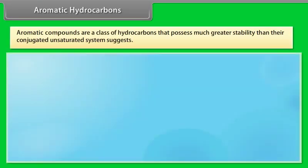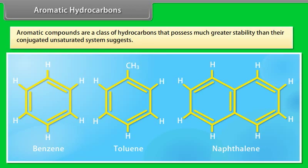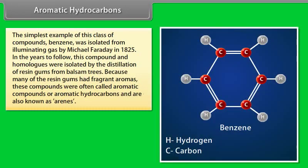Aromatic hydrocarbons. Aromatic compounds are a class of hydrocarbons that possess much greater stability than their conjugated unsaturated system suggests. The simplest example of this class of compounds, benzene, was isolated from illuminating gas by Michael Faraday in 1825.